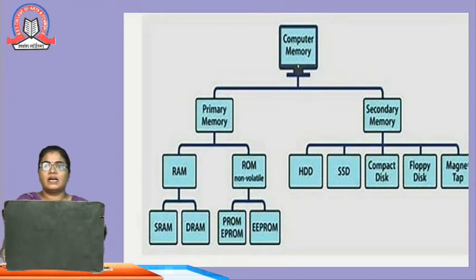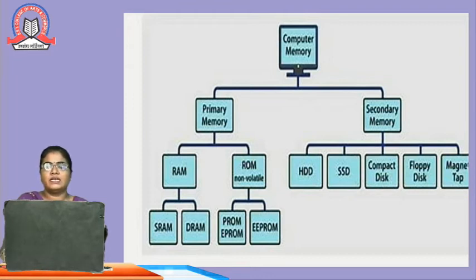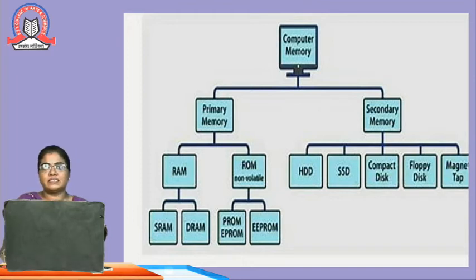Next topic is types of memory. We are going to see primary and secondary memory. In primary memory, we have RAM (random access memory) and ROM (read-only memory). Under RAM: SRAM (static RAM) and DRAM (dynamic RAM). Under ROM: ROM, programmable ROM (PROM), and electrically erasable ROM (EEPROM). Secondary memory includes HDD (hard disk), SSD — now introduced and used in all laptops — compact disk, floppy disk, and magnetic tape.